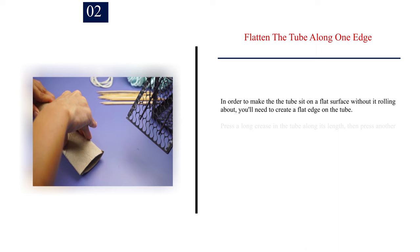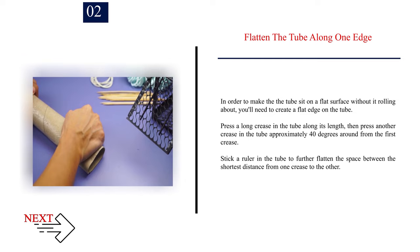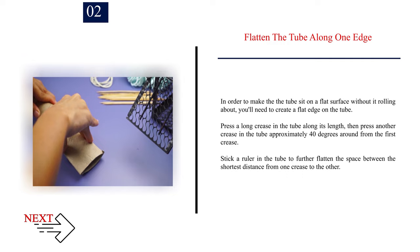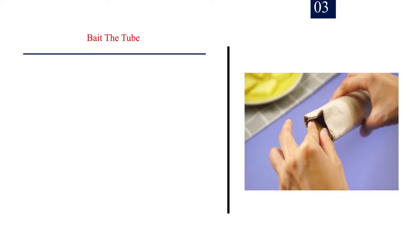Number 2: Flatten the tube along one edge. In order to make the tube sit on a flat surface without it rolling about, you'll need to create a flat edge on the tube. Press a long crease in the tube along its length, then press another crease approximately 40 degrees around from the first crease. Stick a ruler in the tube to further flatten the space between the shortest distance from one crease to the other.